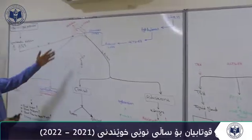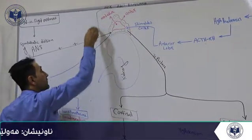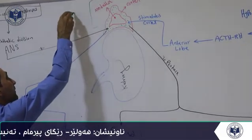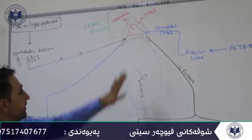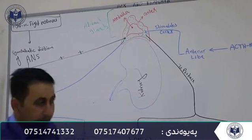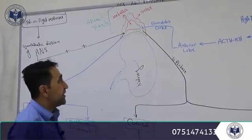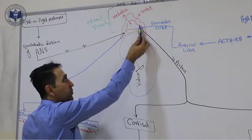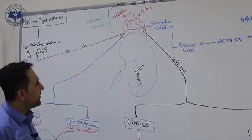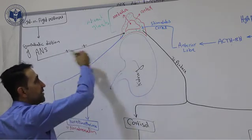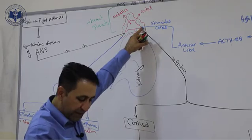The next endocrine gland is the adrenal glands. We have two adrenal glands located above the kidneys. Each adrenal gland consists of two portions: cortex and medulla. These two parts act as two independent endocrine glands — independent in how they are regulated and in the type of hormone they produce.